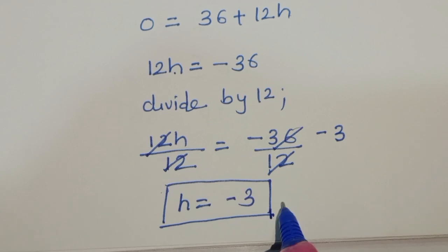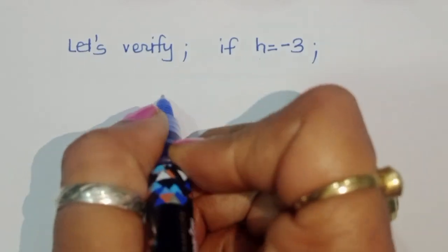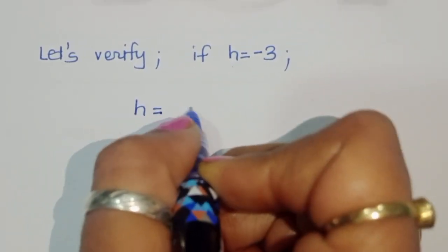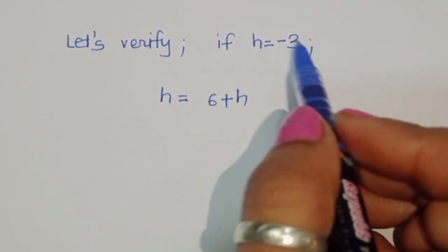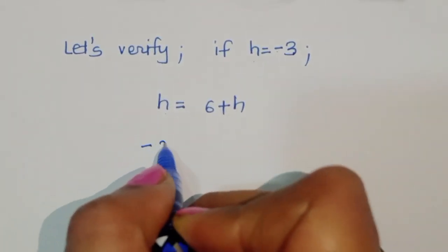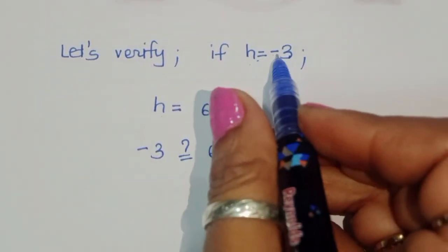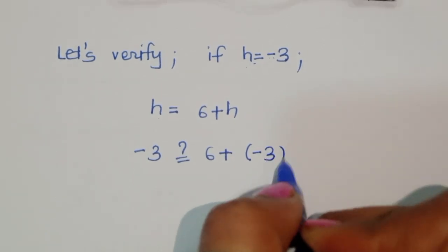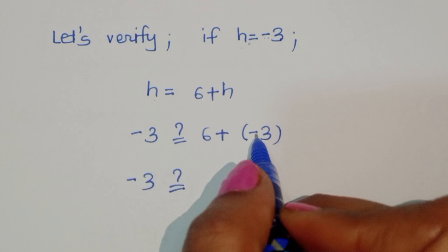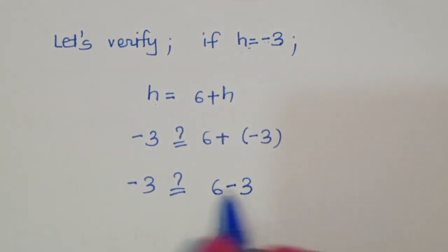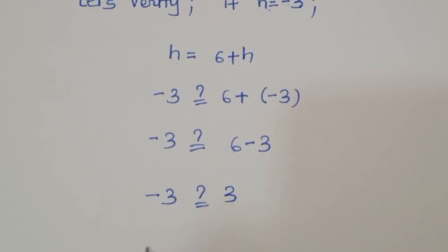Now let's verify if this is correct. The question is h equals √(6 plus h). We substitute h equals minus 3: minus 3 equals √(6 plus minus 3), which gives minus 3 equals √3.